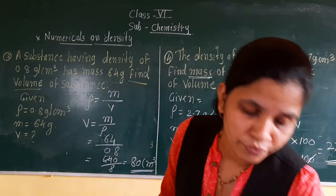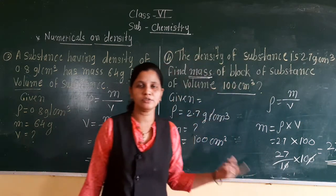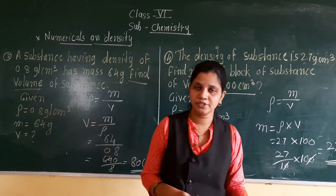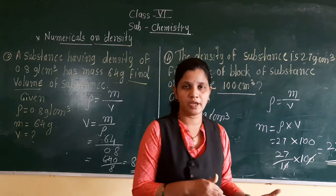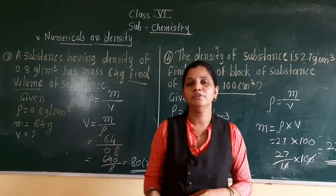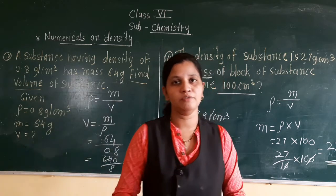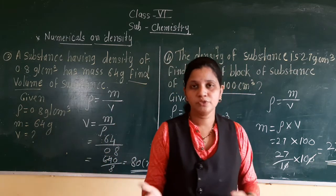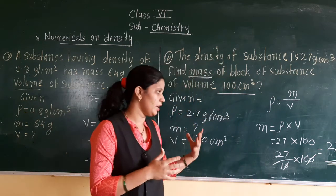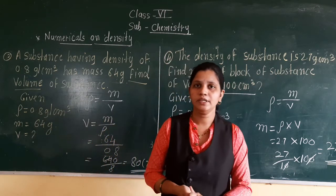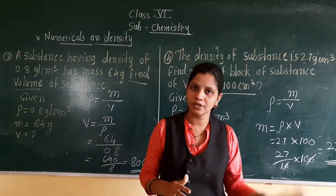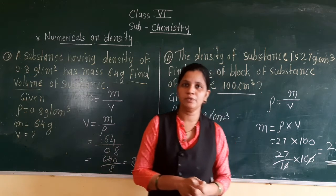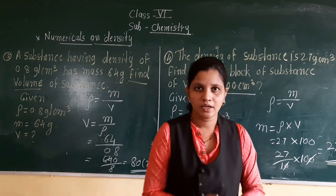So we have discussed 4 examples just now. We covered how to calculate density, and if density and volume are given, how to calculate mass; and if mass and density are given, how to find the volume. Also, if the answer is required in a different unit, how to convert it. So today this topic — density, mass, and formulas — is completed.